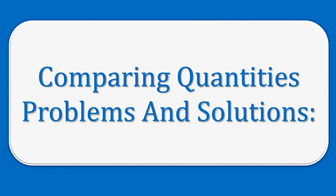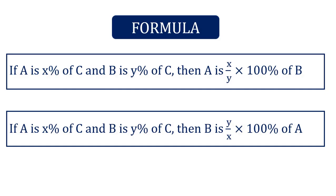Let's see the first concept and the formulas related to this concept. The first formula: if A is x percent of C and B is y percent of C, then A is x upon y into 100% of B. And the second formula: B is y upon x into 100% of A.